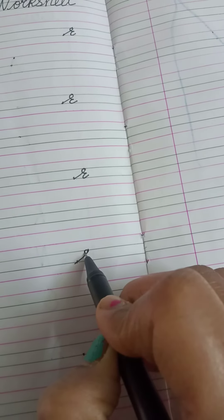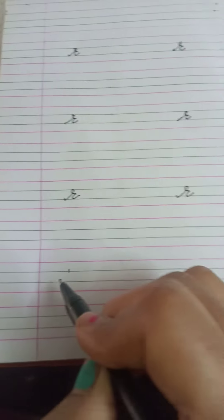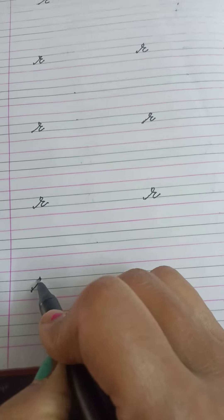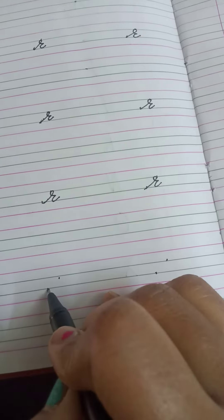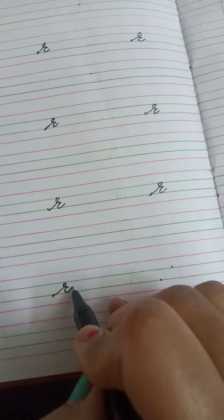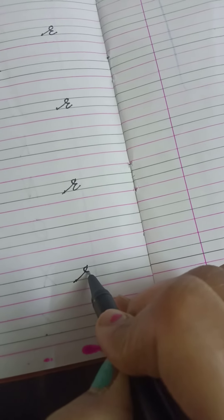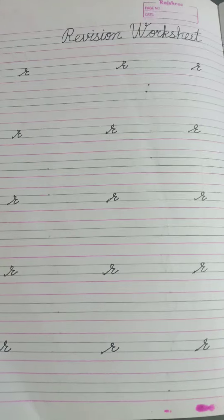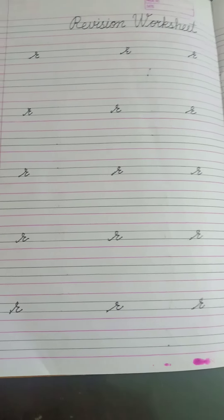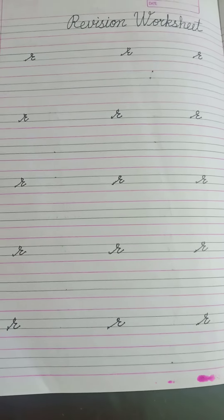Slanting line, turn and half circle. R. Rose. Slanting line, turn and half circle. R. Rose. This is our alphabet R. R. Rose. You have to do your homework properly and sign in your work.